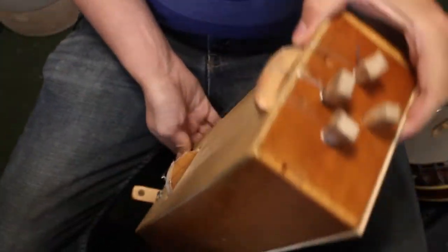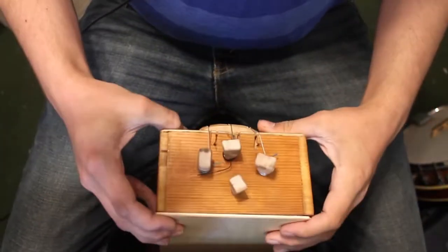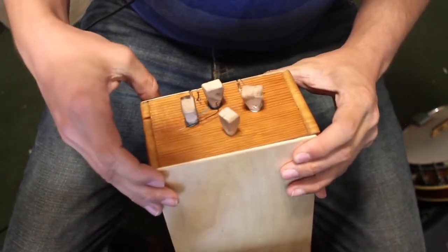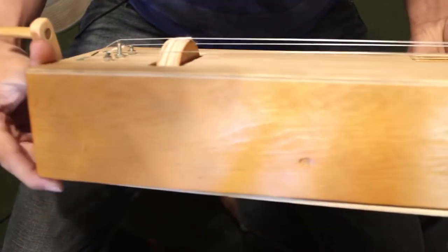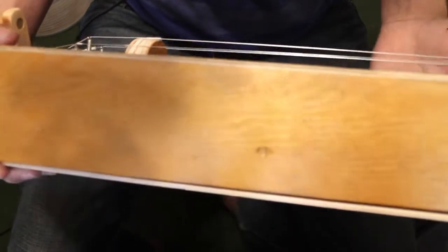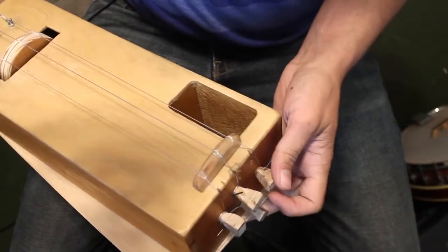It's got friction tuning pegs, and of course those can be a real pain sometimes, but the advantage is they're cheap. They're cheap to make. These are just made out of maple.